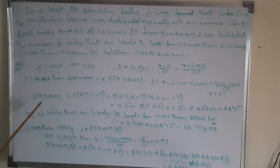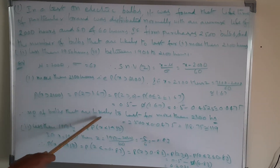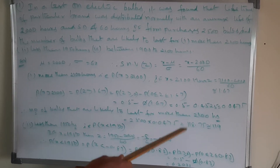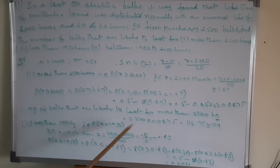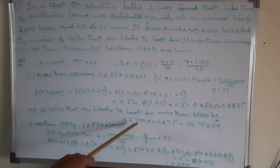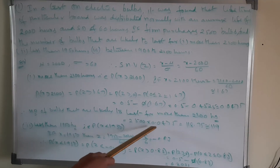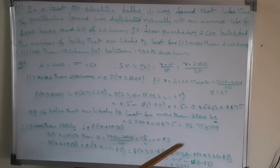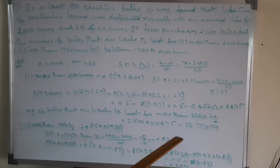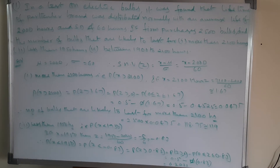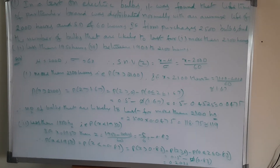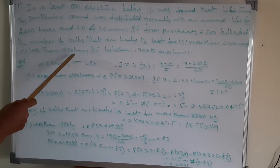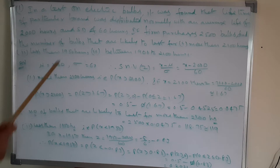Therefore, the number of bulbs likely to last for more than 2100 hours equals 2500 multiplied by 0.0475, which gives approximately 119 bulbs.